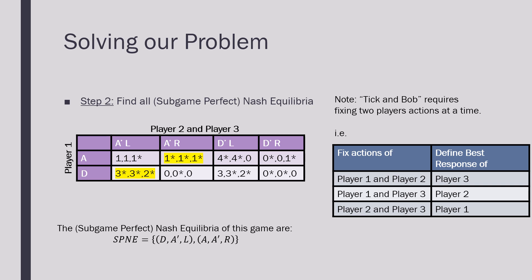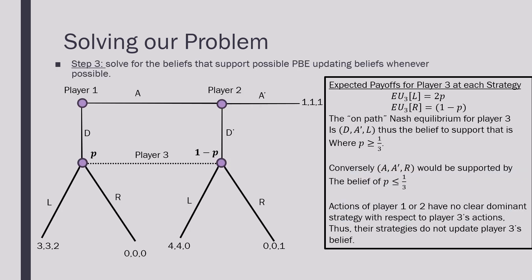If we do that, we'll find that the subgame perfect Nash equilibrium of this game is where player one is playing D, player two is playing A prime, and player three is playing L. The second Nash equilibrium is where player one is playing A, player two is playing A prime, and player three is playing R. We then need to solve for the belief that supports this possible Bayesian equilibrium and update it whenever possible.